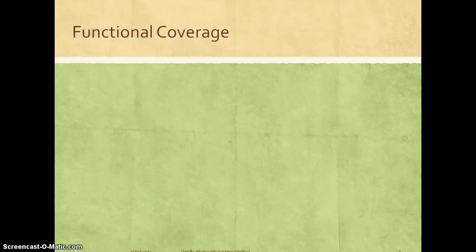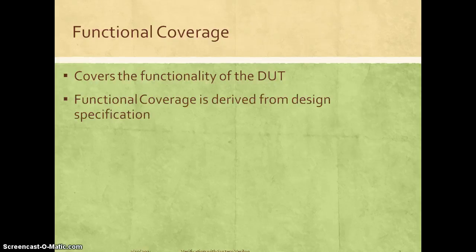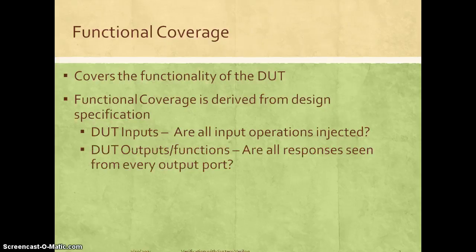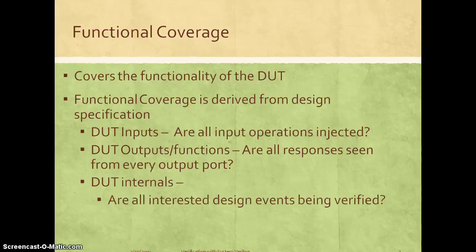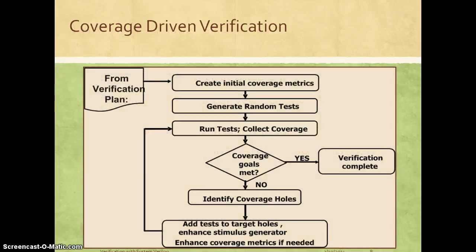Functional coverage is slightly different from code coverage — it covers the functionality of the design and is derived from a design specification. Unlike code coverage, tools cannot generate automatic functional coverage. Based on design specifications, we need to create functional coverage monitors which the tool uses to extract functional coverage during simulation. Examples include whether all input operations are correctly injected, whether all possible responses are seen on every output, and whether internal design events like arbitration mechanisms are covered.